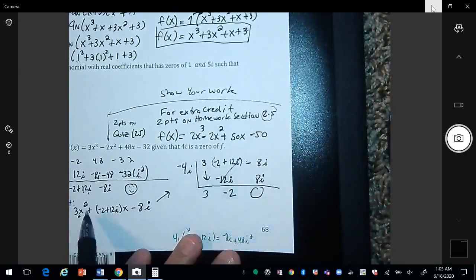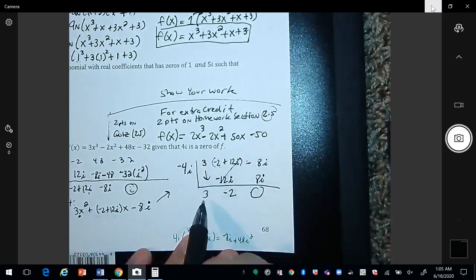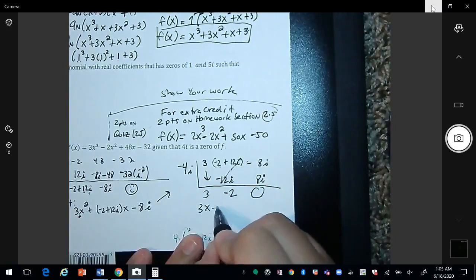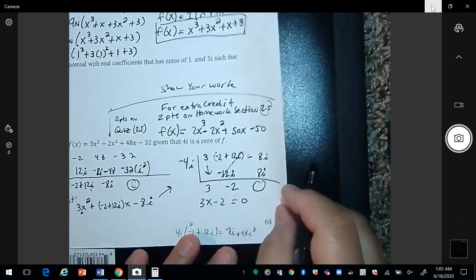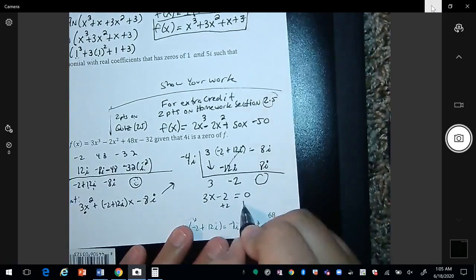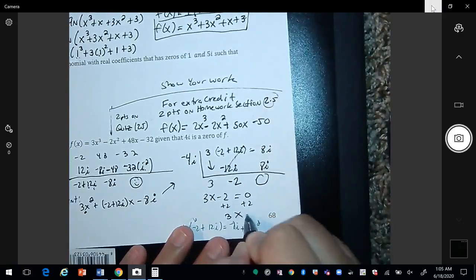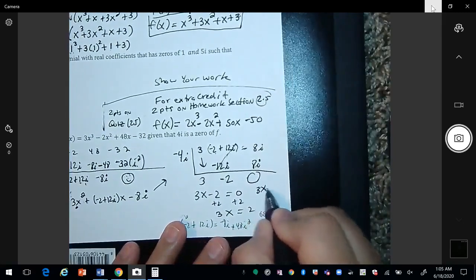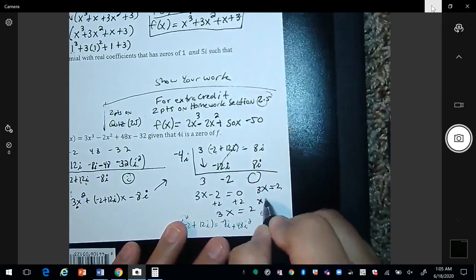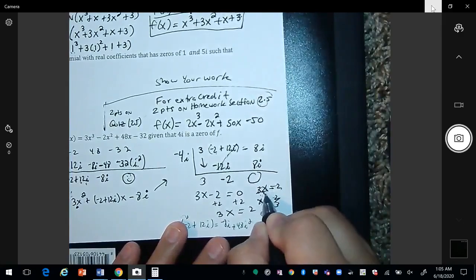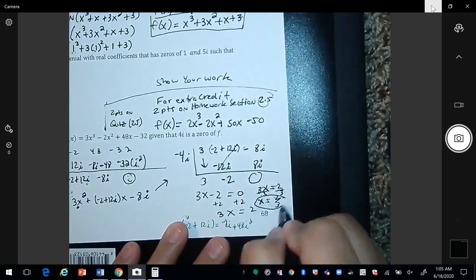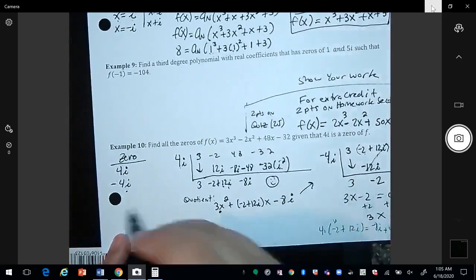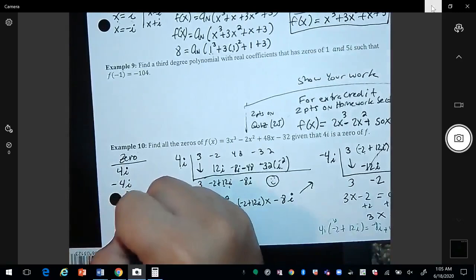So since we were at x squared here, now this would just be 3x minus 2 equals 0. I can add a 2, so 3x is equal to 2. So my zero would be x is 2 thirds if we divide by 3. So my third zero is 2 thirds.